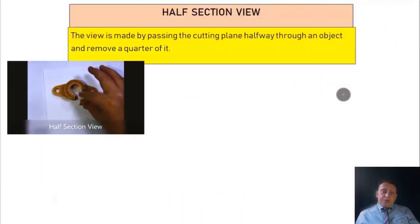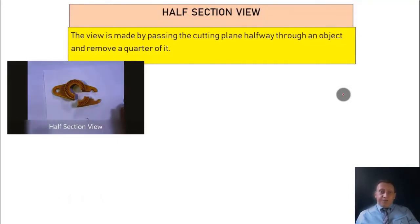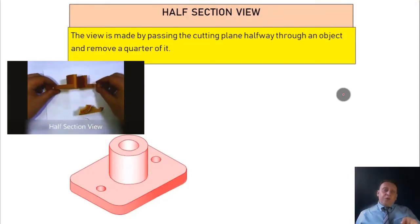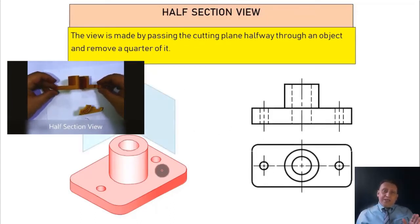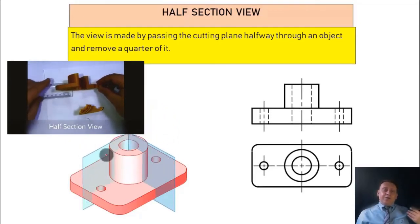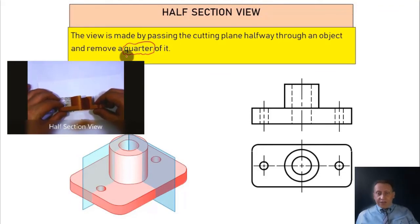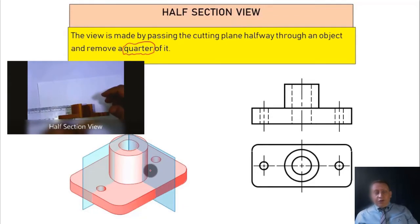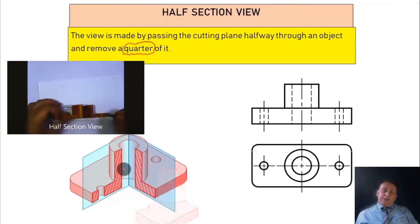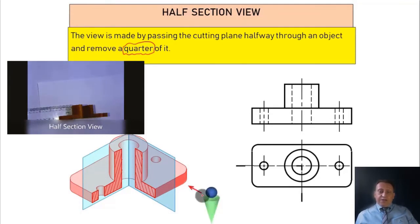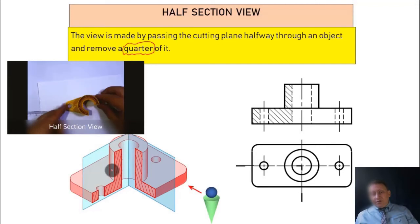Half section view. This view is made by passing the cutting plane halfway through an object and removing a quarter of it. In my 3D printed part, I remove a quarter of the object and then look at the part from the front view. After removing the quarter, you will see two things in one view: you can see the internal part of the object, and you can also see the external part — because you removed only a quarter. In the example shown in pink, we removed a quarter and now look at the object from inside, seeing both internal and external parts.